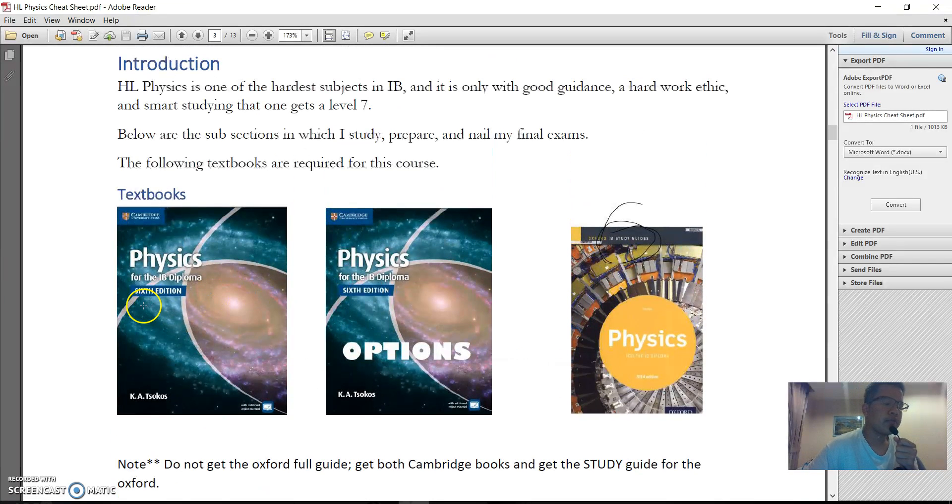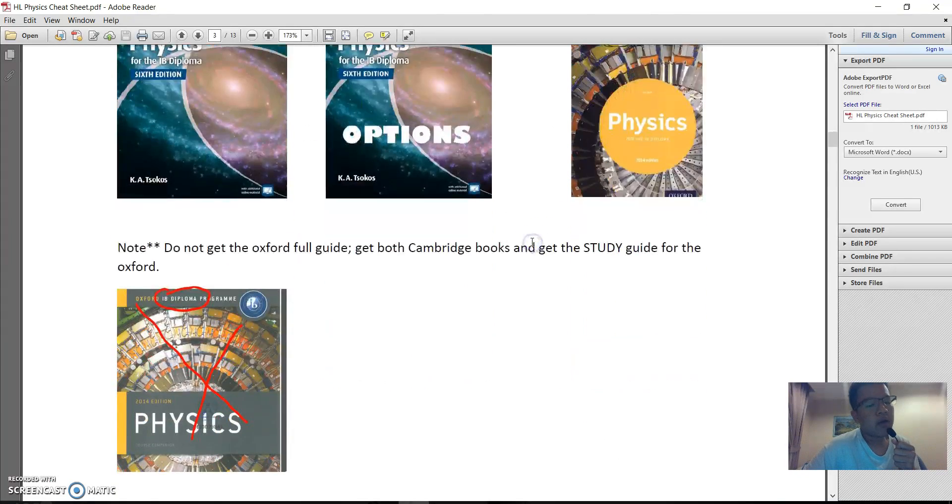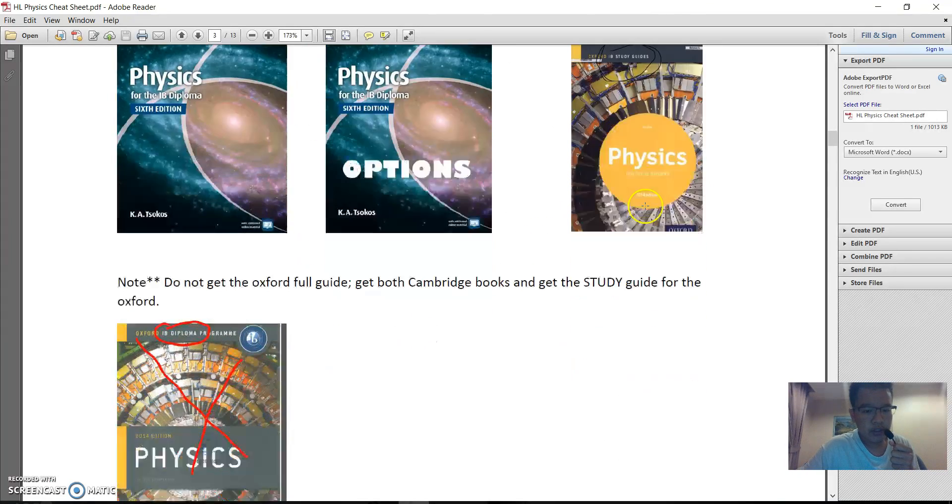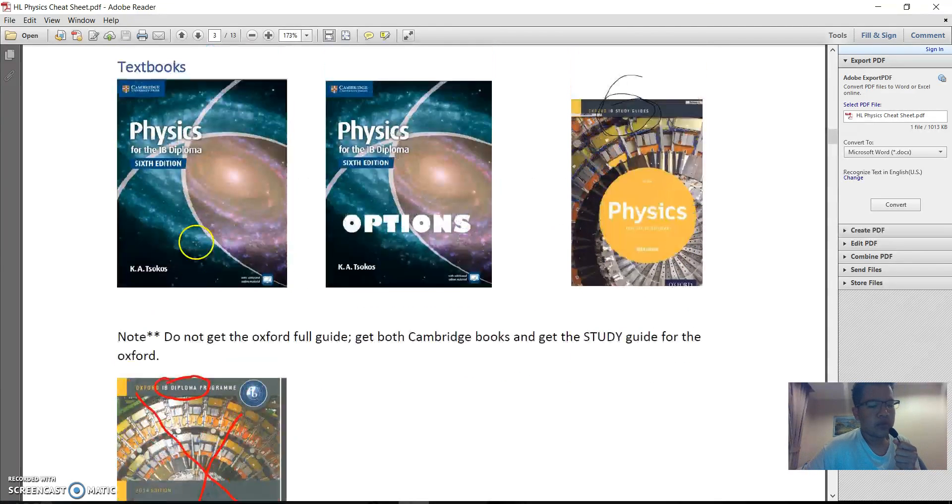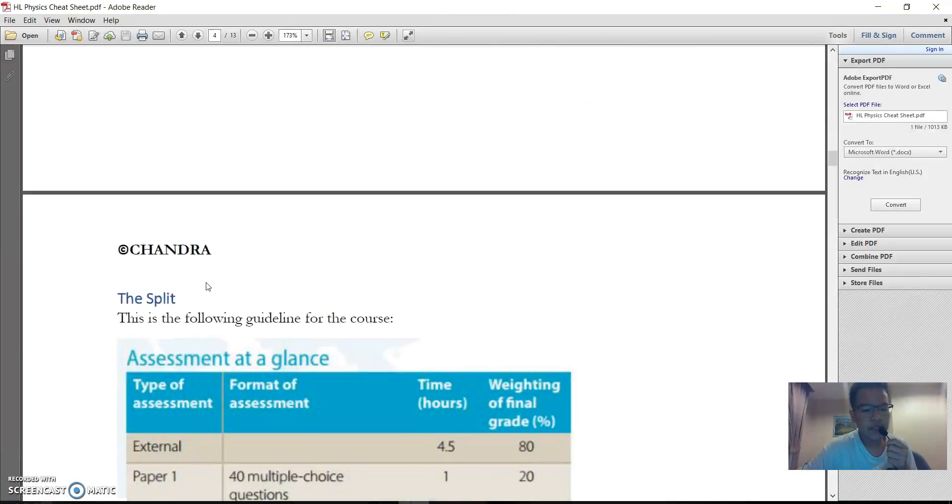So what books did I use? Of course I used the Tsokos, the Cambridge book for the official guide and its option. I also bought the IB Oxford study guide, but not the full guide. I feel like Tsokos is way superior, and Tsokos is, if I'm not wrong, the IB chief examiner for HL physics.